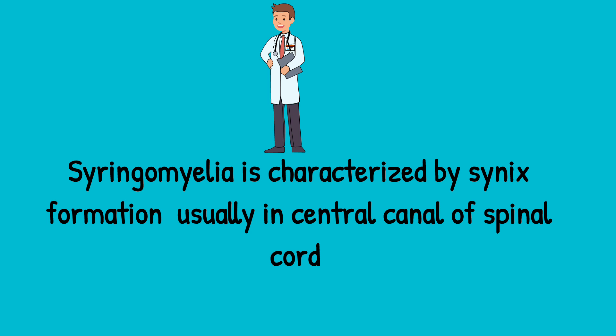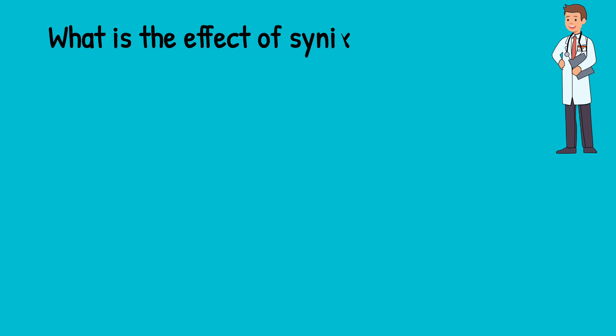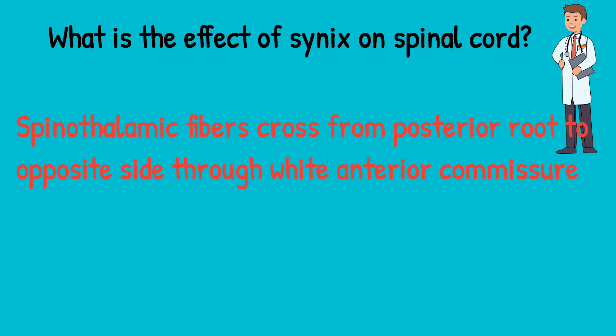Once a cavity is formed, it has its effect on the spinal cord. The spinothalamic fibers cross from the posterior root to the opposite side through the anterior white commissure, and those fibers are affected, which has its own implications.